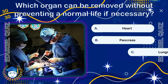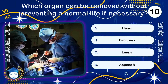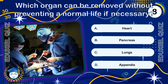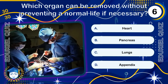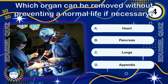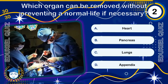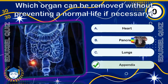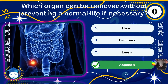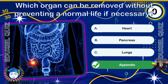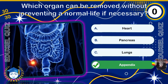Which organ can be removed without preventing a normal life if necessary? The appendix is a small finger-like pouch attached to the large intestine. Once considered useless, it is now thought to play a role in immune function by harboring beneficial bacteria. Appendicitis — its inflammation — is a common reason for emergency surgery.